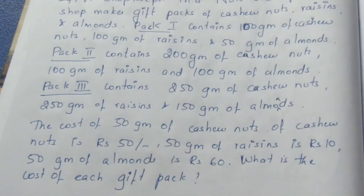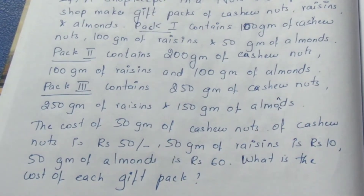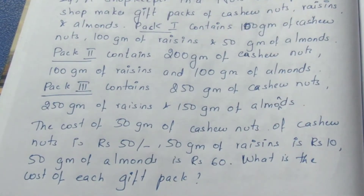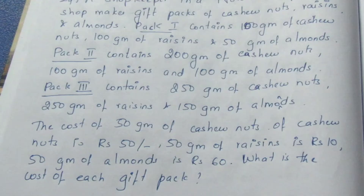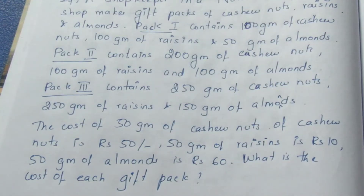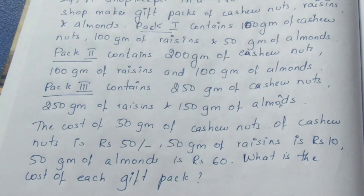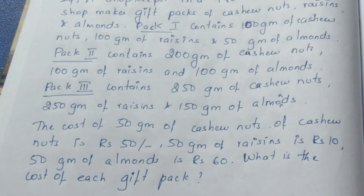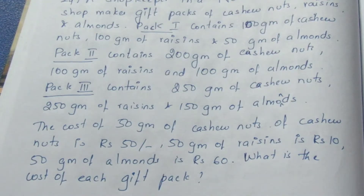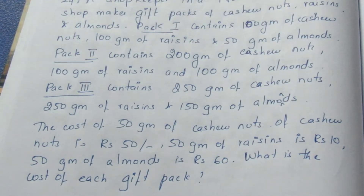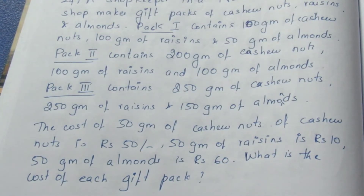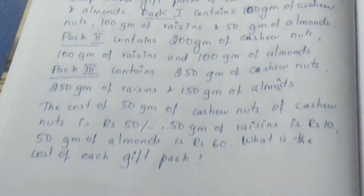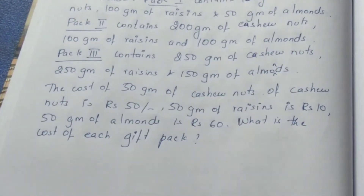The cost of cashew nuts is 50 rupees per 50 grams, cost of raisins is 10 rupees per 50 grams, and cost of almonds is 60 rupees per 50 grams. What is the cost of each gift pack?